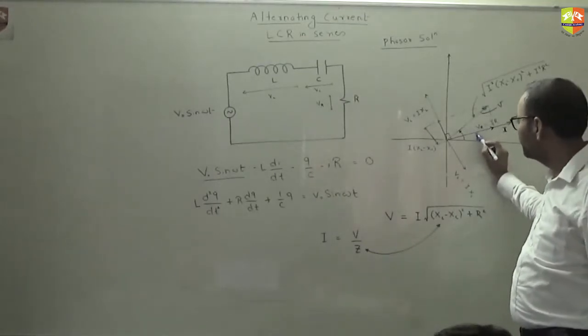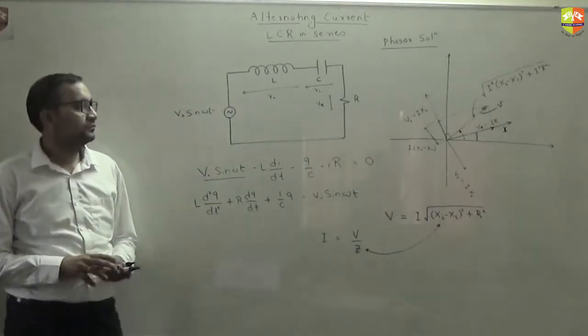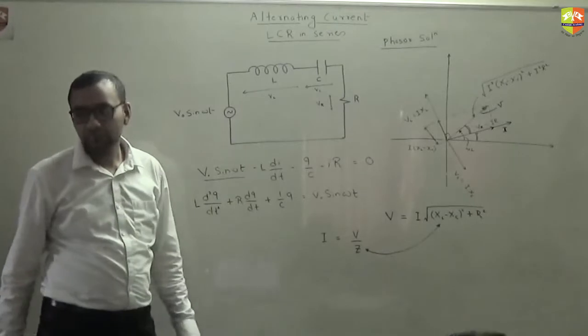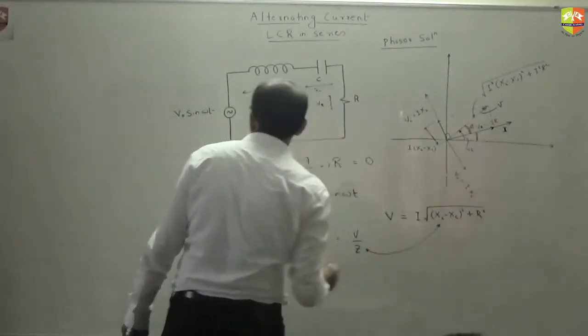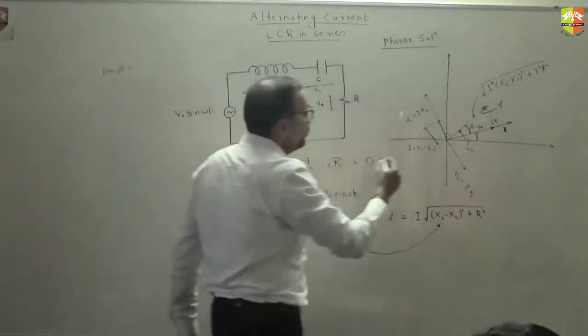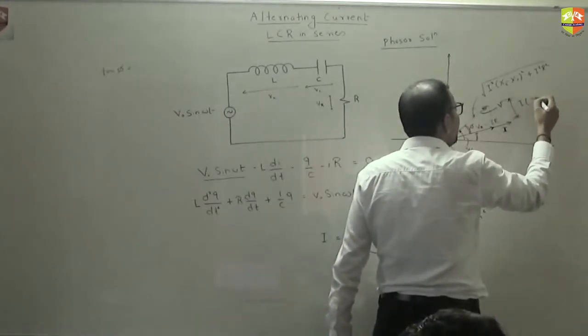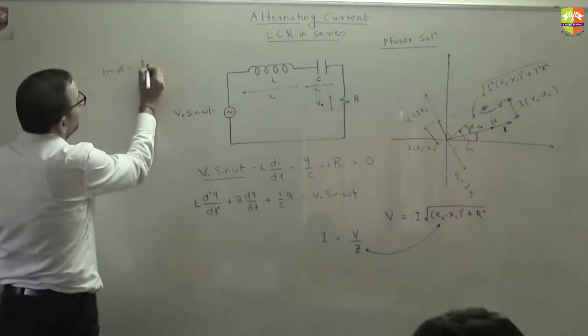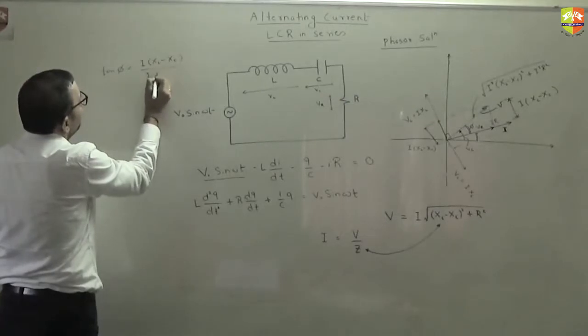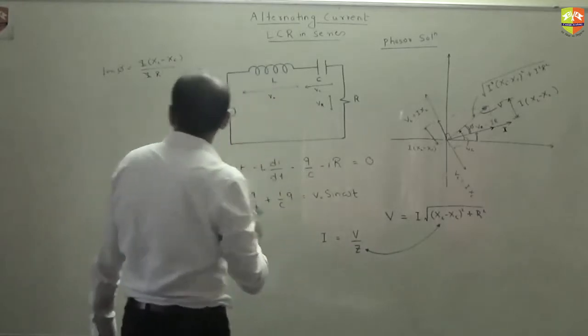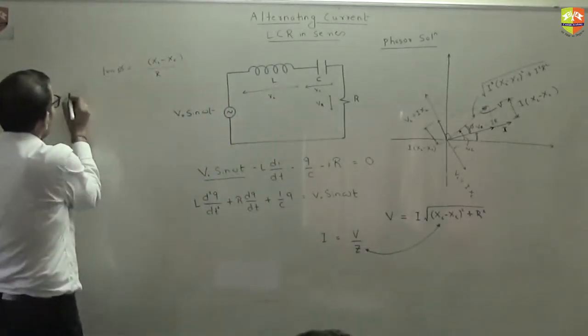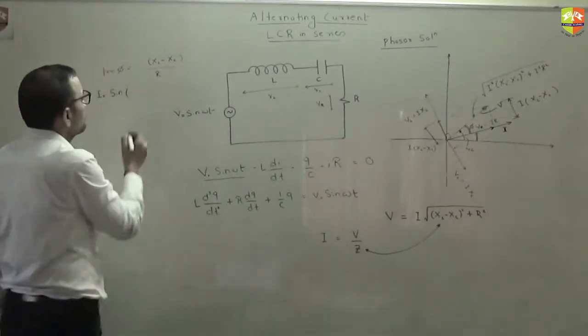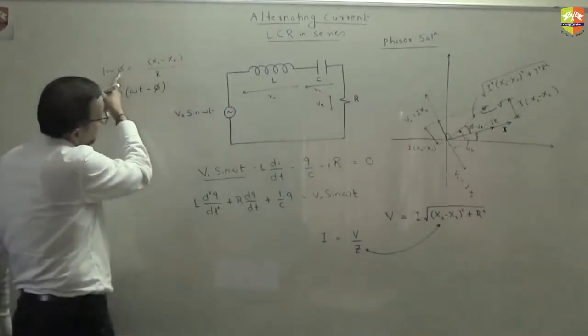What is this angle? You know that this angle is omega t. Do you know this angle? This is let us say phi. Tan of phi will become equal to this length which is I times XL minus XC divided by this length which is IR. Tan of phi is XL minus XC by R. So the value of current will be equal to I0 sin of omega t minus phi. Here phi is tan inverse of this.